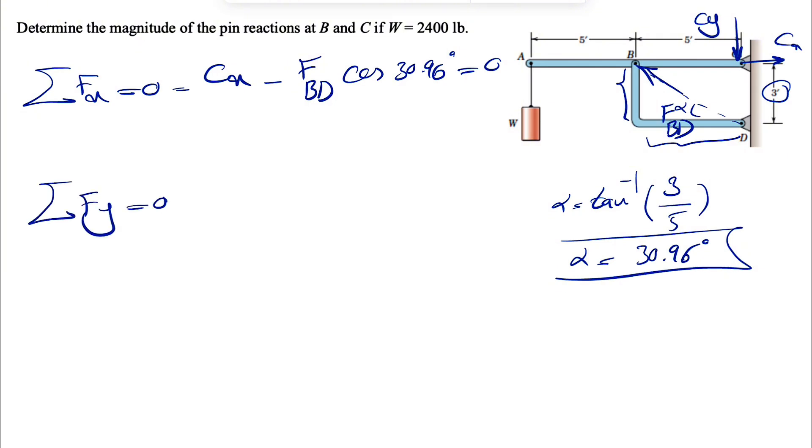Sum of all forces in Y equals zero. We're going to have the same thing. This time we'll have FBD sine of alpha or 30.96 degrees minus CY equals zero. Same thing. And in the previous one, I forgot to put the weight also. So we have also the weight minus W equals zero. So that was missing.